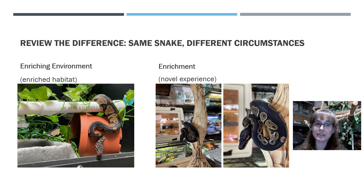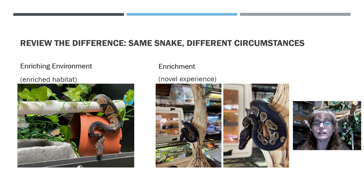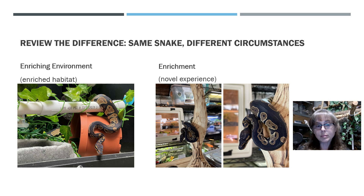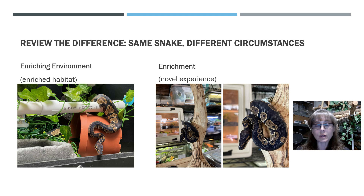The photos on the right are the same snake under different circumstances. She's experiencing enrichment in this photo. It's a novel experience for her — something new — and it could be physically or mentally stimulating. It could also be sensory stimulation because she's on a wooden textured bird perch. She's out of her enclosure in a room with lots of activity, and she's free to climb around. So in one picture she has an enriched environment around her all the time, and in the other she's experiencing a novel thing — an enrichment activity just this one time. Maybe we might do this again in a few days or a few weeks, but we want to keep this experience new and interesting for her.